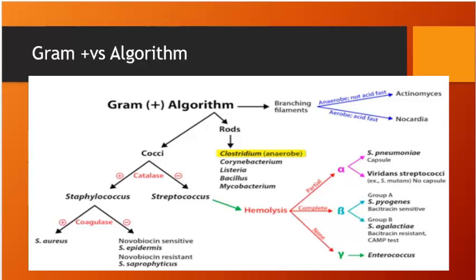Bacillus cereus is associated with Chinese refried rice, causing diarrhea within 6 hours. Mycobacteria are two types to remember: Mycobacterium tuberculosis and Mycobacterium leprae, which causes leprosy or Hansen's disease. TB treatment: first two months is HRZE — INH, rifampicin, pyrazinamide, ethambutol, plus pyridoxine, plus or minus streptomycin. Then continuation for four to seven months with INH and rifampicin.